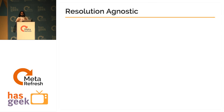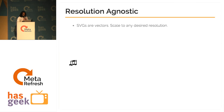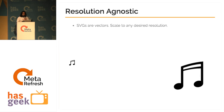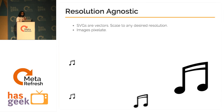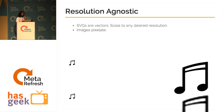So how do SVGs help? SVGs are basically resolution agnostic. SVGs are basically vectors — they scale to any desired resolution, whereas images pixelate.